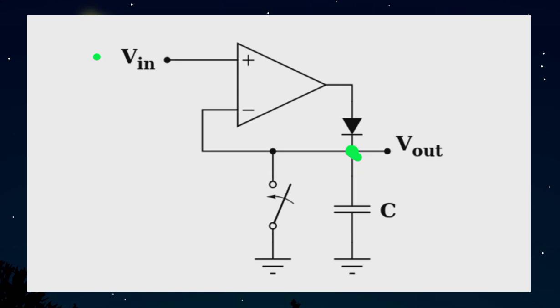When the input signal falls, then there is a negative voltage at the output of the amplifier that reverse-biases the diode, and the diode is open-circuited.